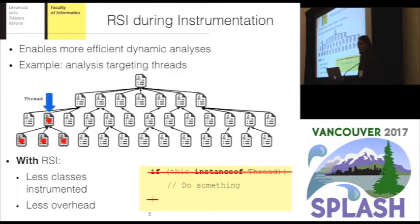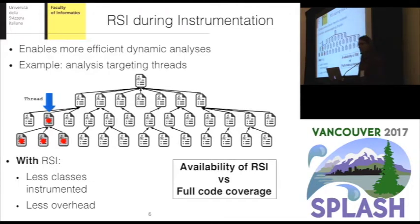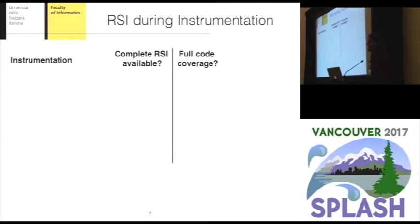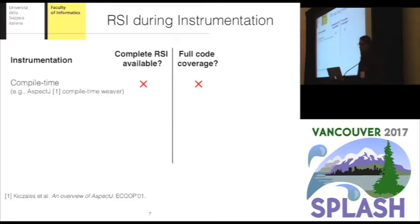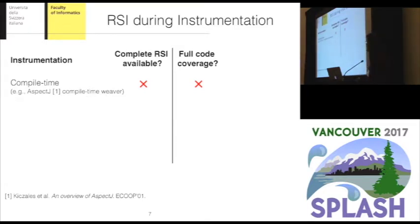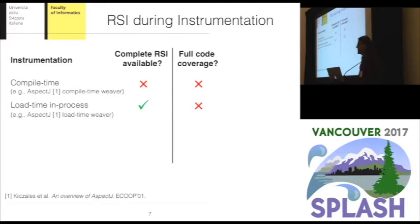In general, having reflective supertype information during instrumentation is desirable. Unfortunately, the availability of reflective supertype information is usually in contrast with the ability of the framework to instrument all the classes loaded by the JVM — a feature we call full code coverage. For example, frameworks that rely on compile-time instrumentation generally have no access to complete reflective supertype information, and usually they also cannot instrument all the classes that can be loaded by the JVM. This is the approach used by the compile-time weaver of AspectJ.